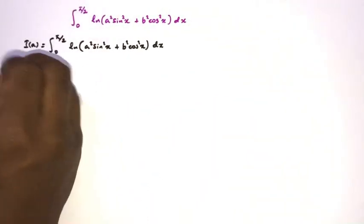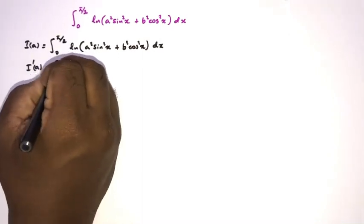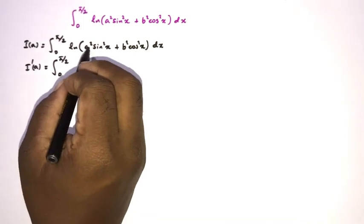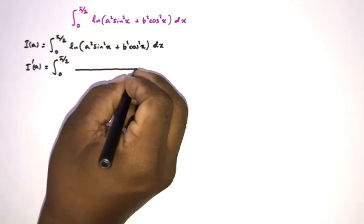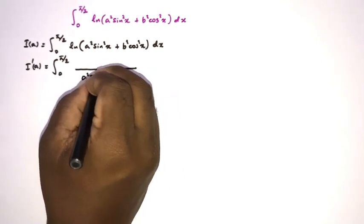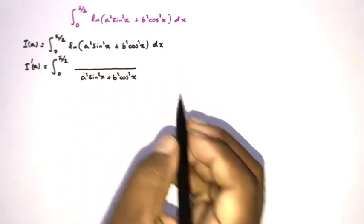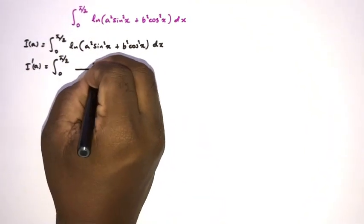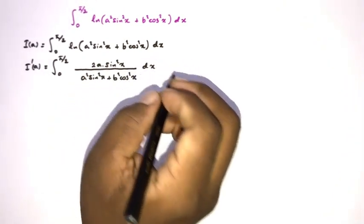Now I am going to differentiate with respect to a. So I'(a) = ∫₀^(π/2) of the derivative. Since the argument of the natural log is a²sin²x + b²cos²x, by the chain rule we differentiate a²sin²x with respect to a, giving 2a·sin²x in the numerator, over (a²sin²x + b²cos²x) dx.